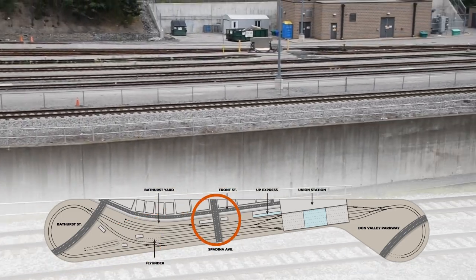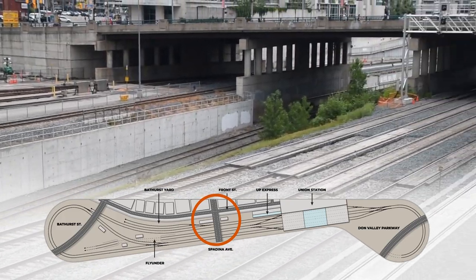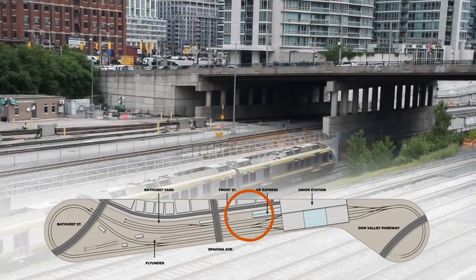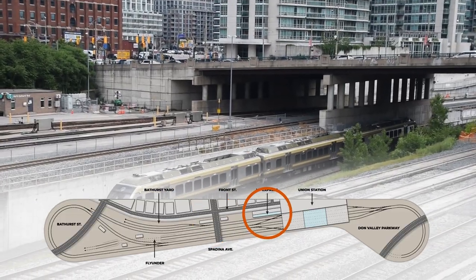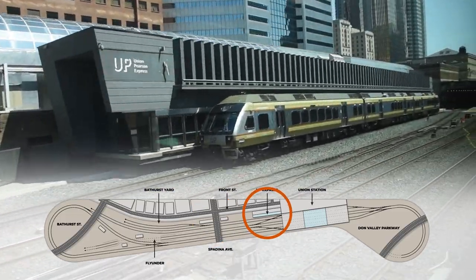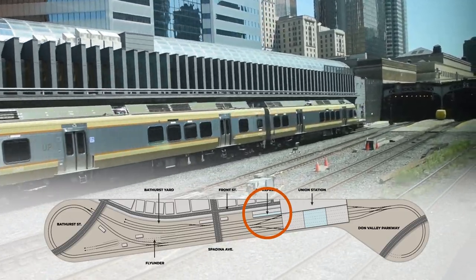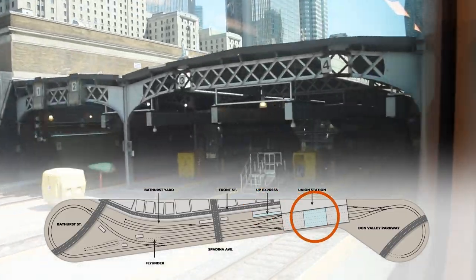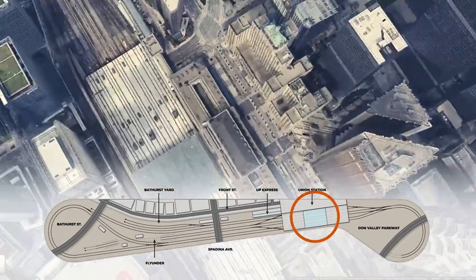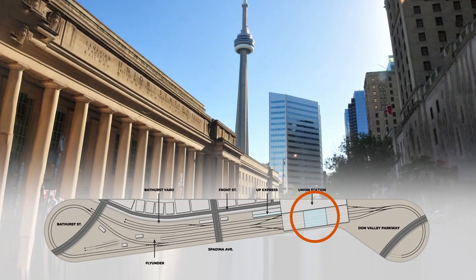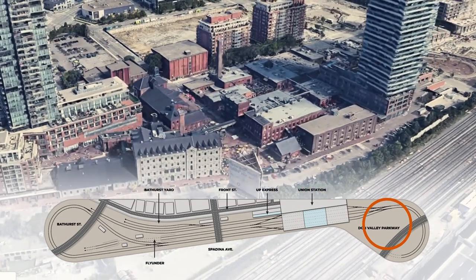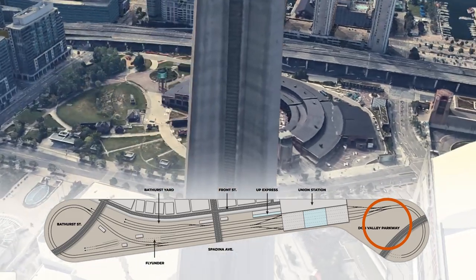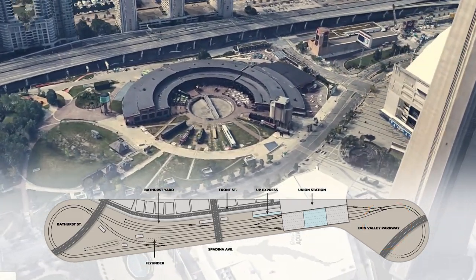Spadina Avenue creates a visual break, separating the layout into two halves, and features four lanes of automobile traffic and two streetcar lines. Before arriving at Union Station, I've made a point of featuring the UP Express — the Union Station to Pearson International Airport direct train — connected directly to the feature landmark of the layout, Union Station. At this time, the scenic treatment for the area just east of Union Station is unresolved. I've included the Don Valley Parkway as a way to disguise the return route, but this area could include landmarks like the Distillery District or the Toronto Railway Museum.